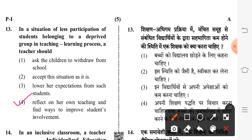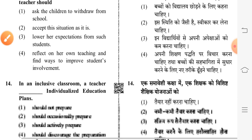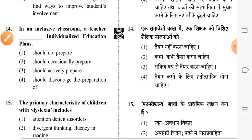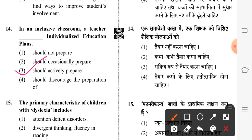Fourth option is correct: reflect on her own teaching and find ways to improve students' involvement. Next question: in an inclusive classroom, a teacher should prepare individualized education plans — third option is correct: should actively prepare.